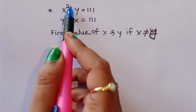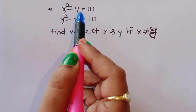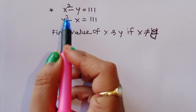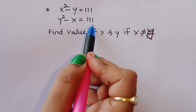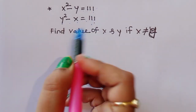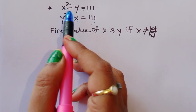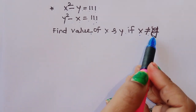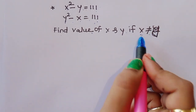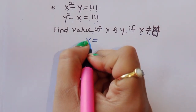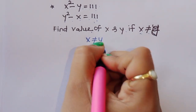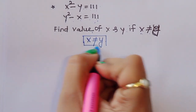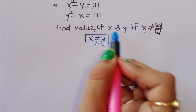The question is: given x squared minus y is equal to 111, and y squared minus x is equal to 111. These are two equations. We have to find out the value of x and y, with the condition that x is not equal to y. We have to follow this condition and find out the value of x and y.